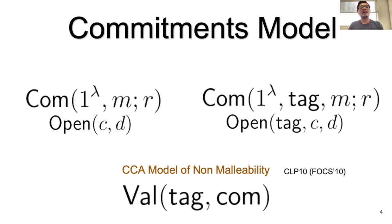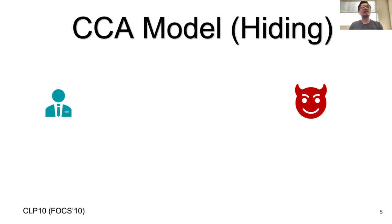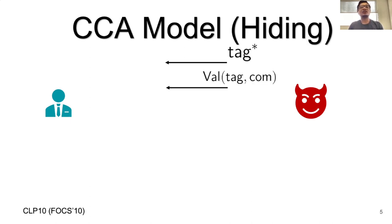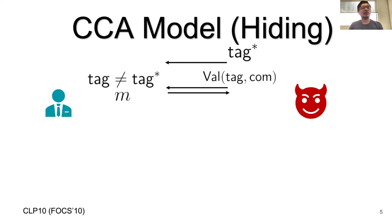The val algorithm is an inefficient algorithm that takes a tag and a commitment, and outputs the message related to that commitment. In the security definition, we have a challenger and an adversary. The adversary sends a challenge tag tag* to the challenger, and gets access to a val oracle: it can query on some tag and some commitment, and the challenger replies — if the queried tag differs from tag* — with the message related to that commitment, or ⊥ if none exists. The adversary makes use of this val oracle in a non-trivial manner.